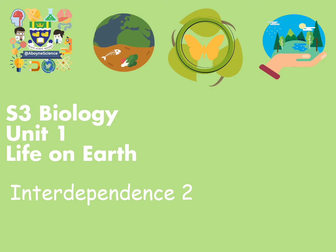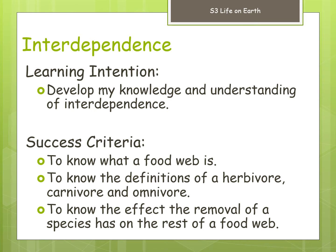Hello again biologists, this is Mr. Canaire with your second video lesson for S3 Biology Unit One: Life on Earth. This lesson is about interdependence. Our learning intention is to develop your understanding of interdependence. Our success criteria are: knowing what a food web is, knowing definitions of herbivore, carnivore, and omnivore, and understanding how the removal of a species affects the rest of a food web.